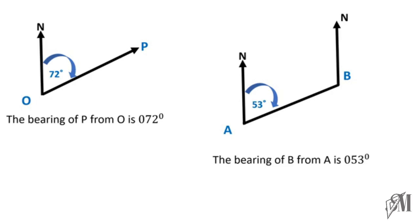Now, what is the bearing of A from B? That means you are standing at B and finding the direction of A. First, we find the supplementary angle at B. The two north lines are parallel, so 53° and the angle at B are allied angles, and allied angles sum to 180°. So 180 − 53 = 127 degrees.